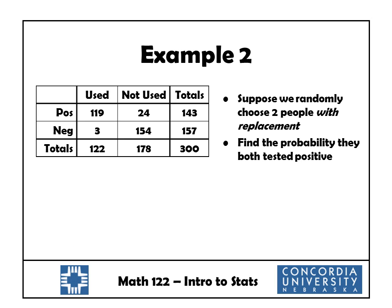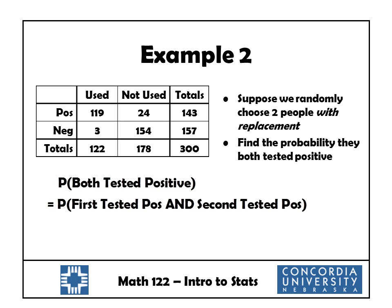Now let's look at a slight variation on this procedure. Suppose we randomly choose two people with replacement — that means I'm going to choose one person from the 300, and then put that person back and choose a second person also from those 300. Find the probability that they both tested positive. This is the same probability in words: both tested positive means the first tested positive and the second tested positive. The probability that the first tested positive: I've got 300 people to choose from, 143 tested positive. Then I put that person back, so when I choose the second person, I've still got 300 to choose from and 143 that tested positive. I do that multiplication and get 0.227.